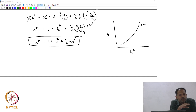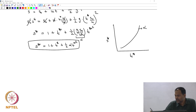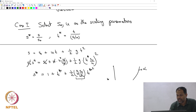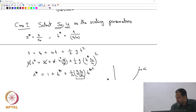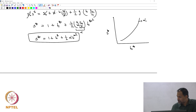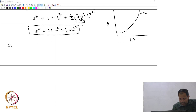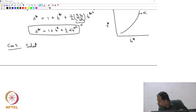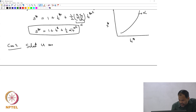We were able to do this because we selected two scaling parameters: S₀ and U. Now let us try Case 2 — select U and G as the scaling parameters.